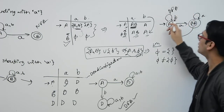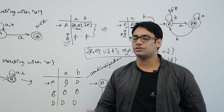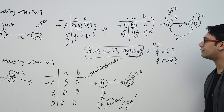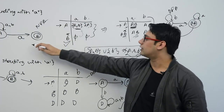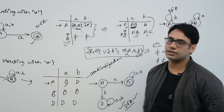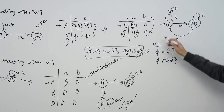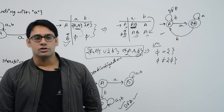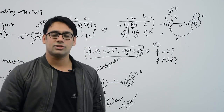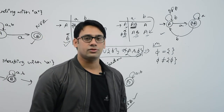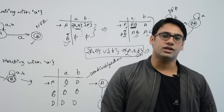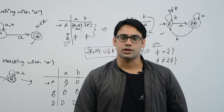We have created an equivalent DFA for the given NFA. You can check by taking some random strings — see if they are in the language and check whether the DFA accepts them. You can convert any NFA to DFA in this fashion. Let us take a few more examples, including some more complicated NFAs, and we will try to convert those NFAs to DFAs.